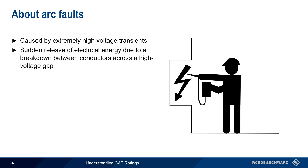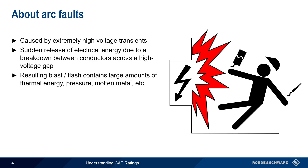Arc faults are caused by a sudden release of electrical energy across a high voltage gap due to a breakdown across that gap. This breakdown or bridging may be between different phases, or between a phase and ground. The resulting blast or flash contains large amounts of thermal energy, pressure, molten metal, etc., all of which are extremely hazardous to humans.